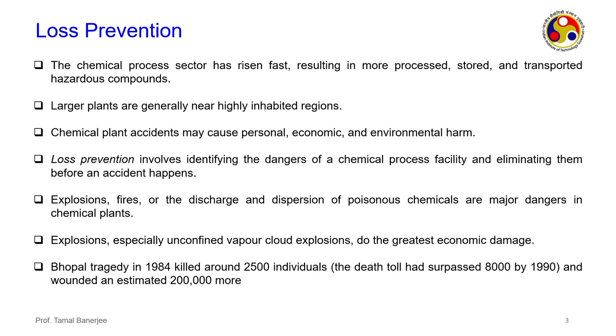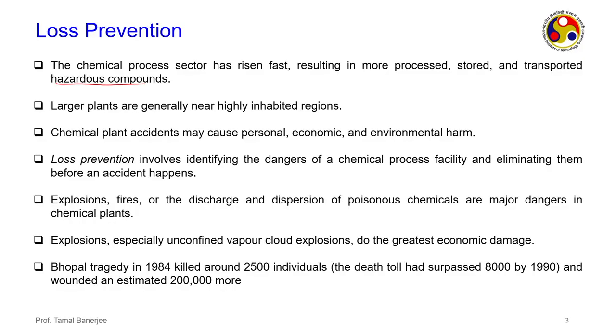We will also discuss key industrial disasters — primarily the Bhopal gas disaster, which you all know, and the Seveso disaster in Italy. Bhopal gas tragedy is a typical example of vapor cloud explosion, and we will see ways to mitigate it. Loss prevention involves identifying the dangers of a chemical process facility and eliminating them before an accident happens — a priori action.